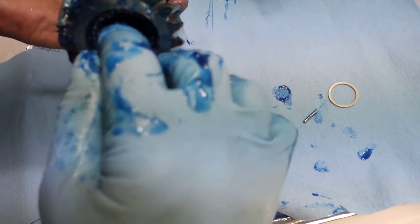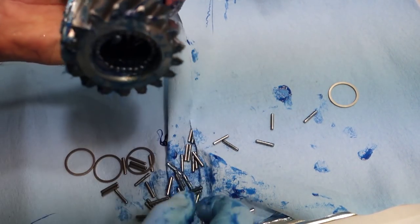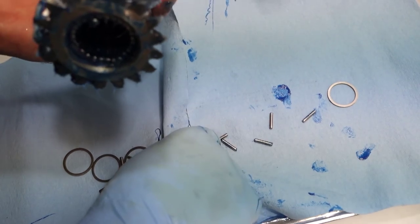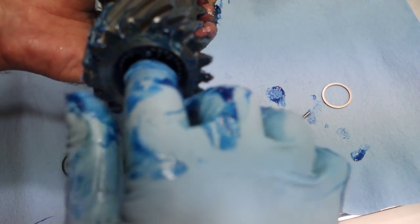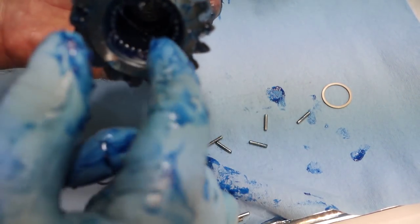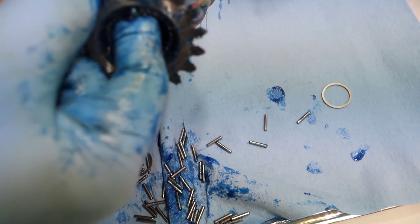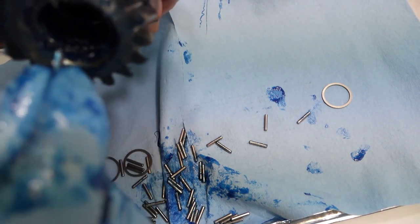Pretty much the same process, just some have more spacers than others. The T10s and the Muncies are the only ones that have a spacer tube. The top loader and the Chrysler boxes do not have a spacer tube in them.